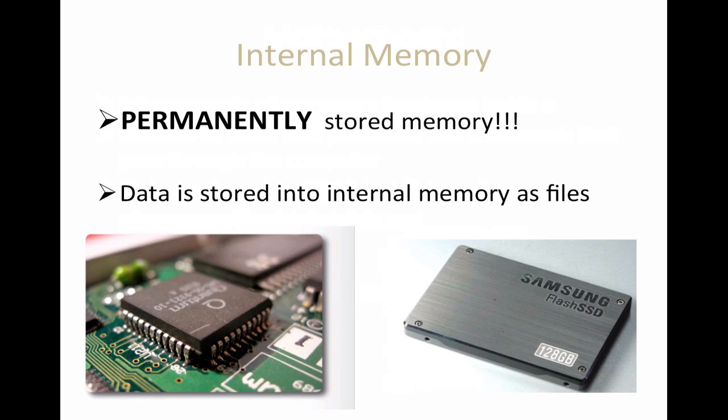Internal memory is the opposite of RAM — it's permanently stored memory. Data is stored as files. For example, if you save a project at home, put it on a flash drive, take it to school, you can pull it up — that's permanently stored memory. Data can be stored on portable devices such as flash drives, SD cards, and external hard drives. You can permanently save, retrieve, and modify files stored in internal memory through program applications.